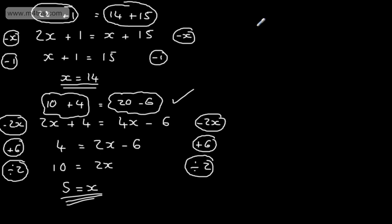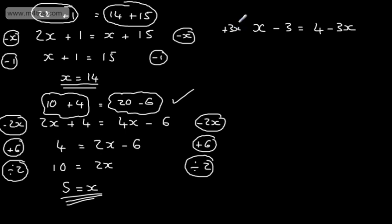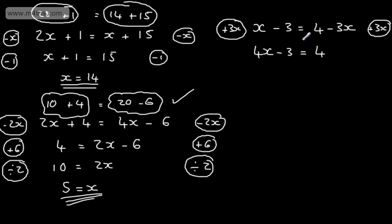Let's do a slightly harder one: x minus 3 is equal to 4 minus 3x. This time I've got 1x here but minus 3x here. What I'm going to do is add 3x to both sides of the equation. We've got a negative 3x, so adding 3x to both sides, I'm going to have 4x minus 3 equal to 4. I'm looking to get x's on one side and numbers on the other.